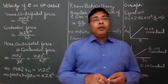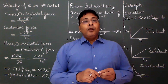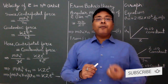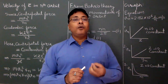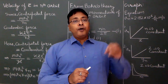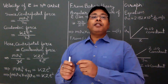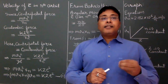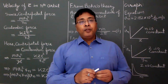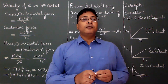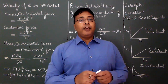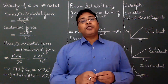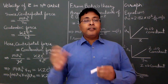In today's class we have to calculate the value of vn. In the previous class we discussed that the electron revolves around the nucleus in a circular path, and the centripetal force is provided by the Coulombic force — the Coulombic force between the positively charged nucleus and the negatively charged electron. If the atomic number of the atom is z, then the nucleus has z protons, each with charge +e, so the charge of the nucleus is +ze and the charge of the electron is e.